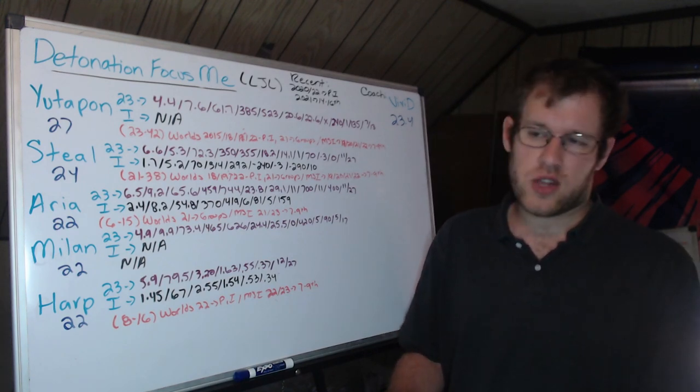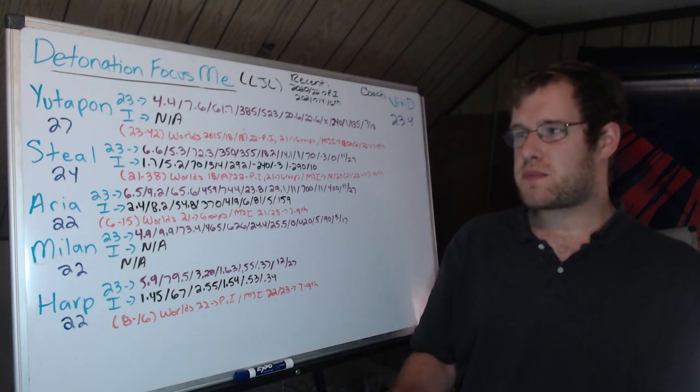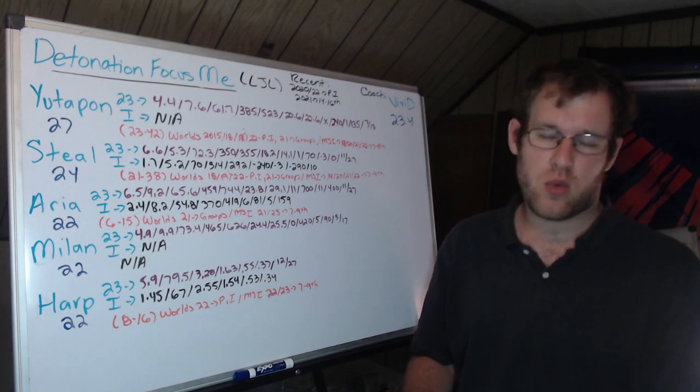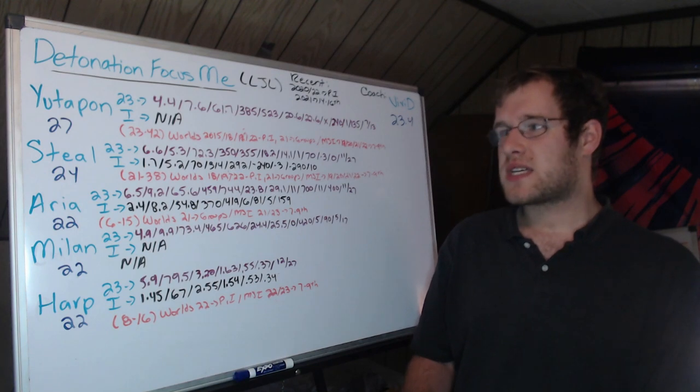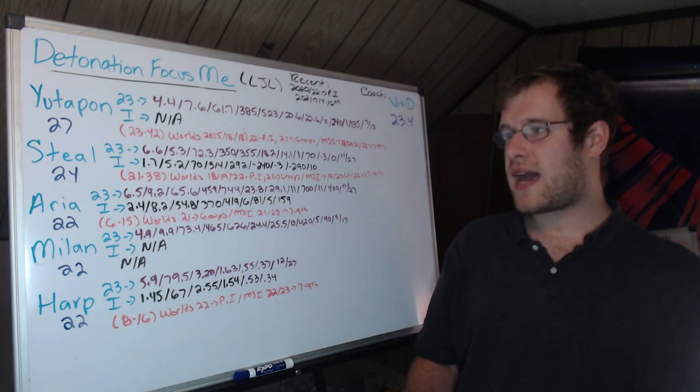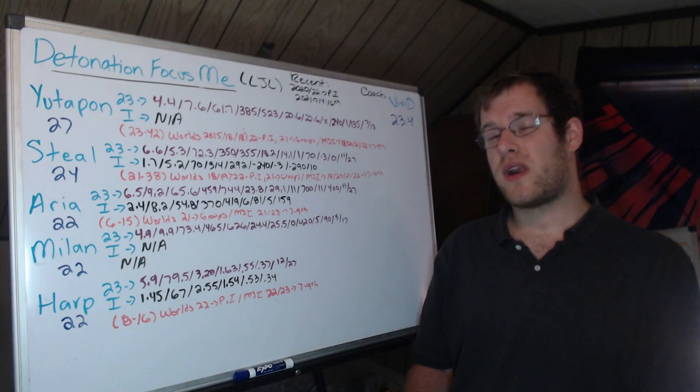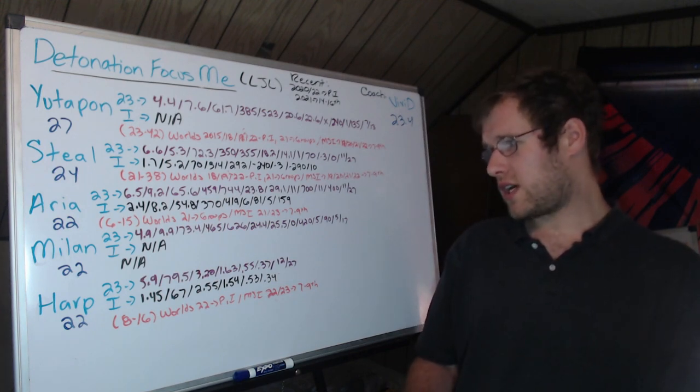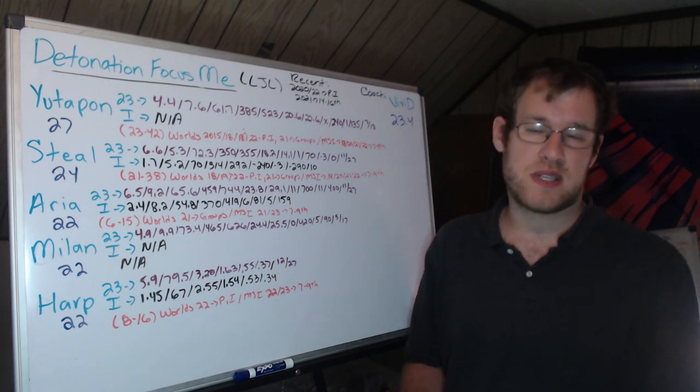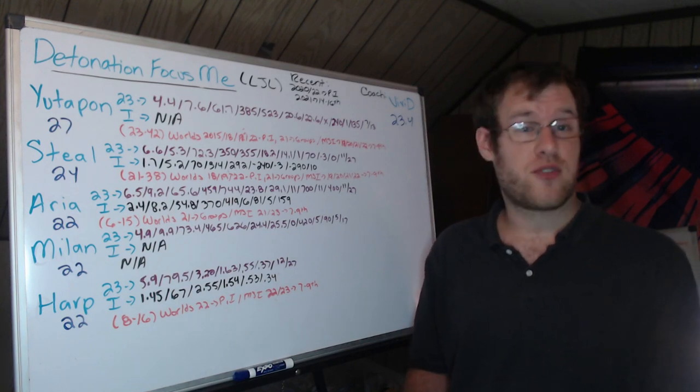In mid lane, we have Aria, 22 years old. Aria is the best player on the team. This past split in the LJL, he was dominant. Once again, he's been dominant every split he plays there, Korean import and all. 6.5 KDA, 9.2 CS per minute, 65.6% KP. 459 gold per minute, that's about 24% of the gold. 744 damage per minute, 29% of damage. He is the carry of the team. 11 solo kills in 27 games. On average, would gap his opponents by 700 gold, 11 CS, 400 XP. So Aria is the difference maker.